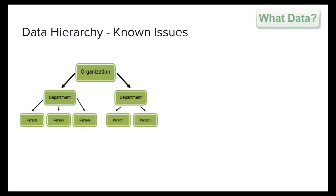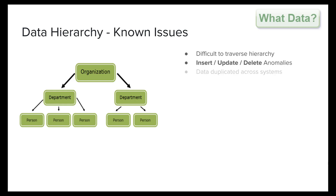Before relational databases came along, data was typically stored in a number of different methods, such as hierarchical data structures and flat file systems, which were cumbersome to update and often led to many discrepancies in data, due to the nature of having duplicate data across systems.